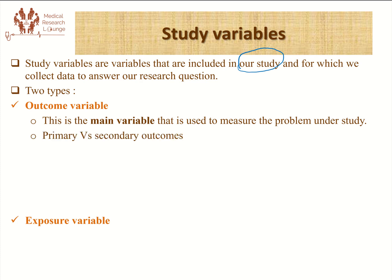But sometimes we can have more than one research question within one research protocol. So if we decide to address more than one research question in one protocol — like in a thematic research — then we are expected to have an outcome variable for each research question. So if I have two research questions, I'm expected to have two outcomes for the two different research questions.